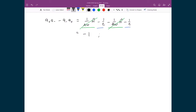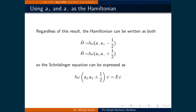So these two operators do not commute. Regardless, we can use the ladder operators to define the Hamiltonian. Recall that when the Hamiltonian is applied to the wave function, we get the energy and the wave function returned to us. Therefore we can use either order of the ladder operators to find the energy of the state. For instance, if the Hamiltonian is defined as h-bar omega times a-plus times a-minus plus 1 half, applied to psi, we get back the energy times psi.